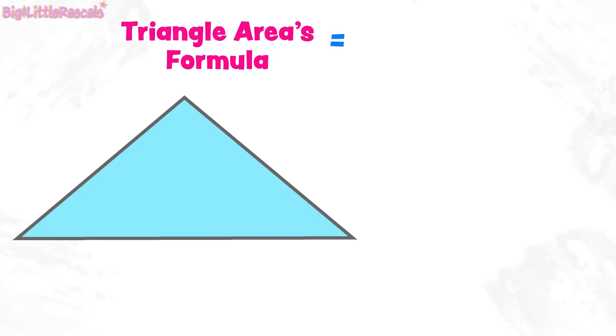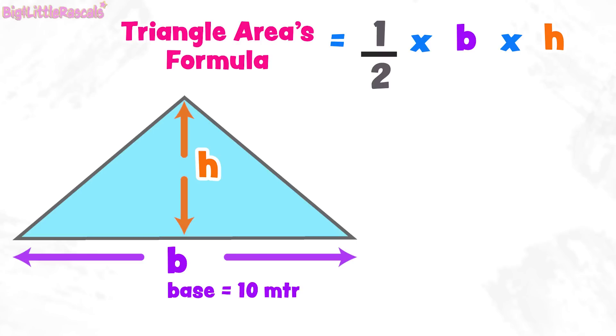Easy, follow this formula. Triangle area equals to half multiplied by b and multiplied by h. B for base length of the triangle and h for height of the triangle.